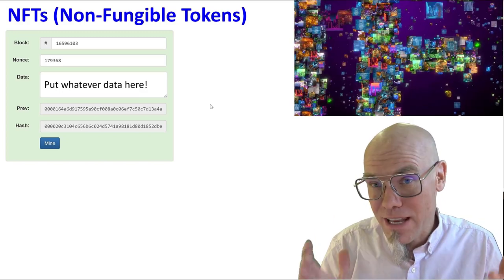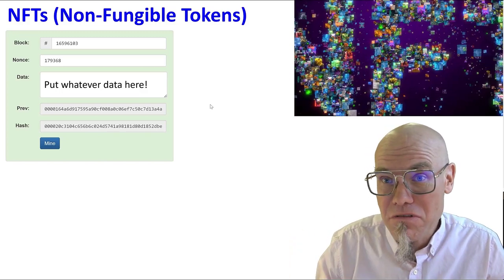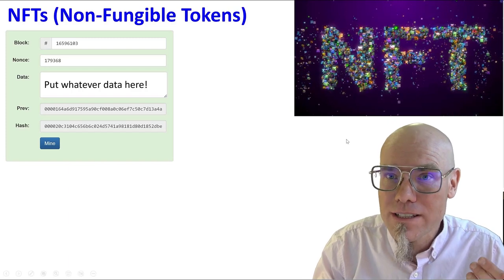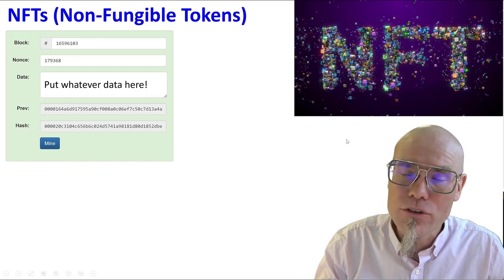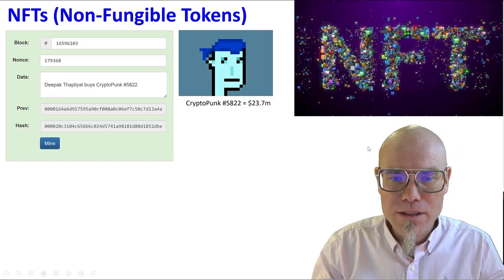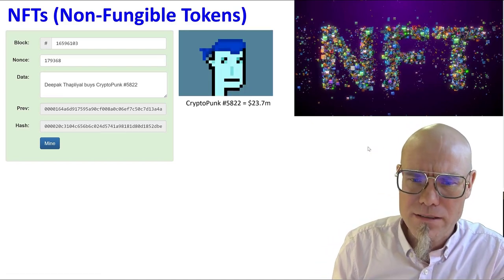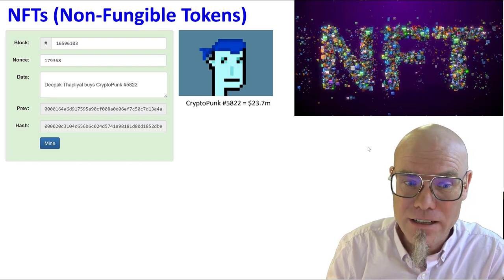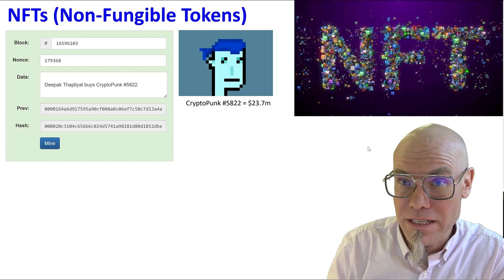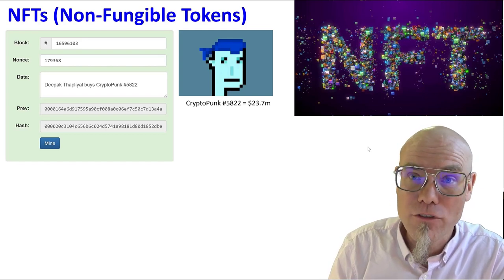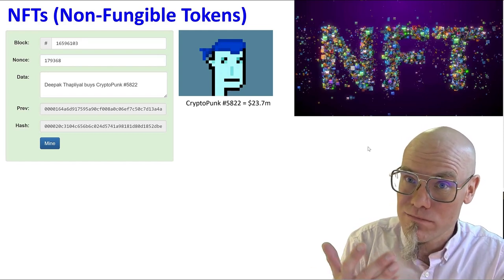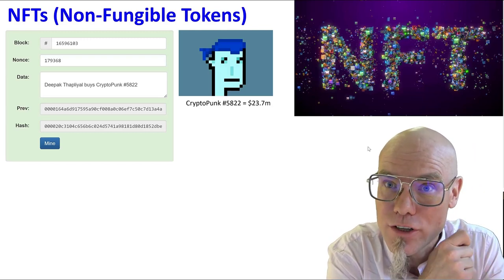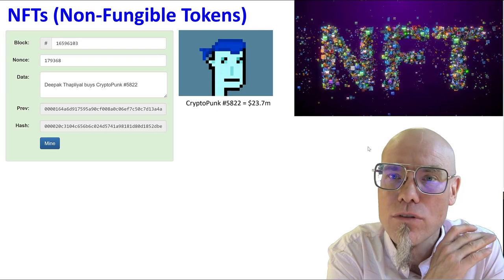A non-fungible token is basically whatever you can think of — some kind of information, an image, digital information. Often it's art; that's what NFTs refer to. For example, this very sophisticated art piece went for 23.7 million dollars. Somebody called Deepak bought it for 24 million dollars and now really owns that thing — Deepak has the property right of that image.